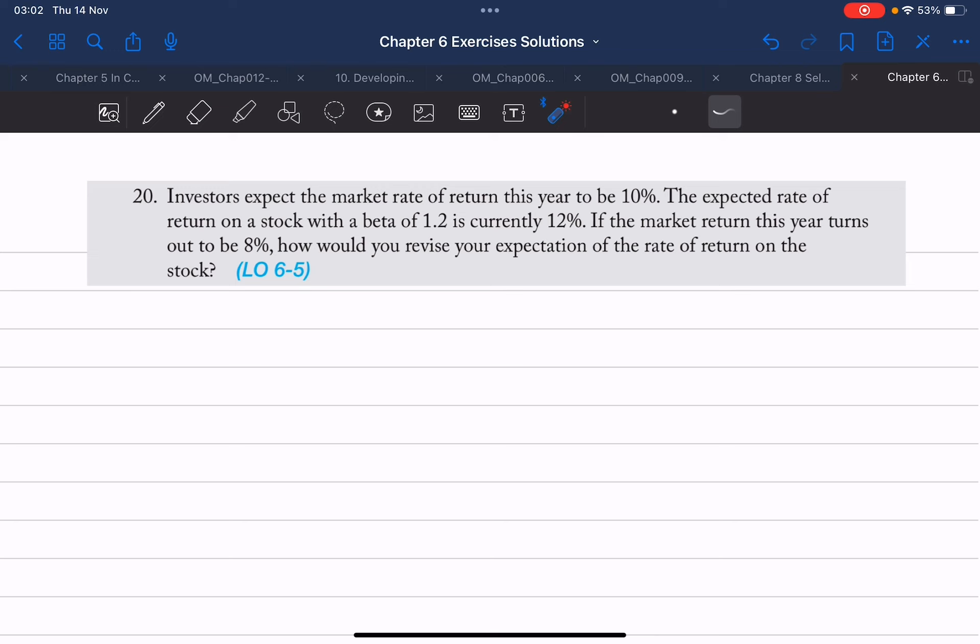Okay, this question is interesting. It measures your understanding of beta. What does beta mean? Beta is a correlation coefficient of a specific stock to the market.